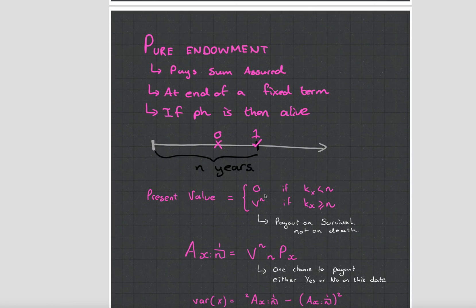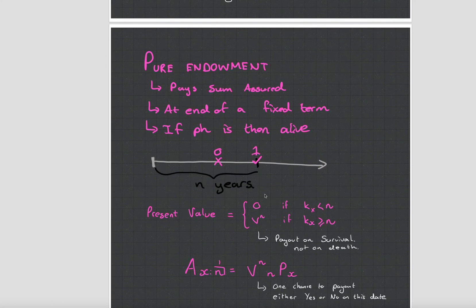Yeah and then pause the video there if you want to read up on that stuff. Okay pure endowment. I like pure endowment. What this is is that if you die within a certain period you get nothing but if you survive to like you know 10 years you get paid a lot of money. Well in this case one. So yeah this is you get paid if you survive and this is more of a savings product whereas the other two have been risk protection products.